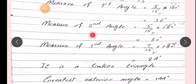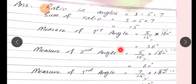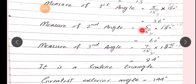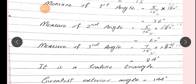Ab hum karte hain measure of second angle. Second ratio kya tha? 5. To 5 ko divide karenge 15 ke saath, aur multiply karenge 180 se. Cutting: 5/15 × 180 = 5 × 12 = 60 degrees. Yeh hamaarey paas measurement hai second angle ki: 60 degrees.